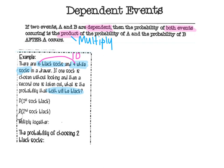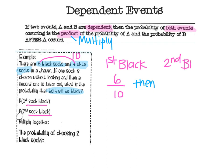I need the first sock to be black, and then the second sock to be black. For the first black sock, there were six black socks out of ten total. Then for the second black sock — once I take a sock away, I don't have six anymore. I took one sock and kept it, so my next fraction is going to be one less: five. Now I have five black socks. And instead of ten total socks, because I kept one, I now have nine total socks.